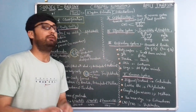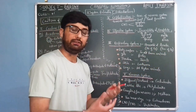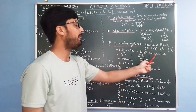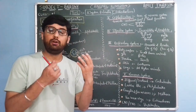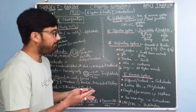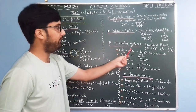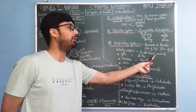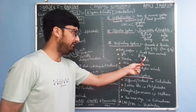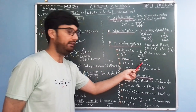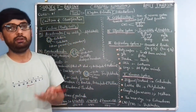Then we have the respiratory system for exchange of gases. Anaerobic means respiration in the absence of oxygen, and aerobic means in the presence of oxygen. Different parts of the body take part in exchange of gases in various animals: body surface in lower animals like porifera, gills in fishes, trachea in arthropods and insects, skin in case of earthworms, and lungs in case of higher animals including human beings.